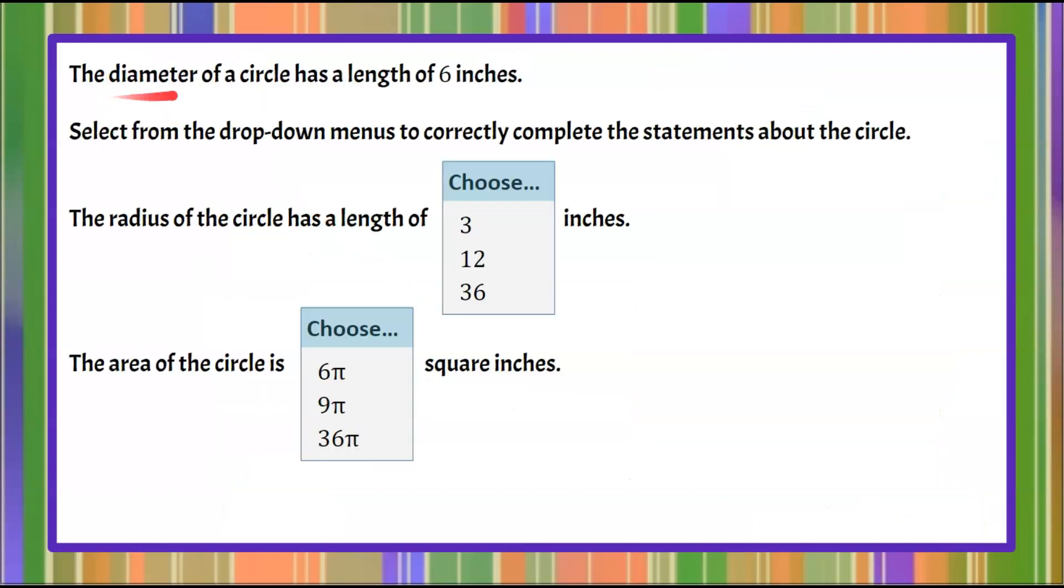We're given that the diameter of a circle has a length of six inches. You're asked to select from these drop-down menus to correctly complete the statements about the circle. The radius of a circle has a length of, we're given three choices in inches, and then we're asked the area of a circle.